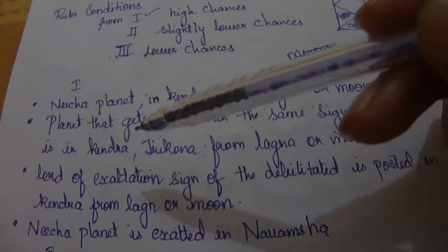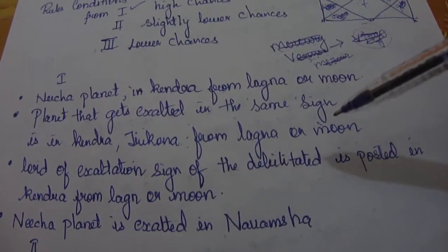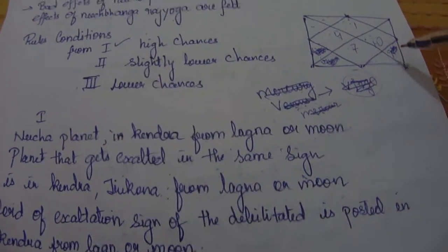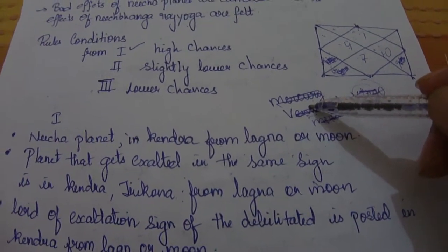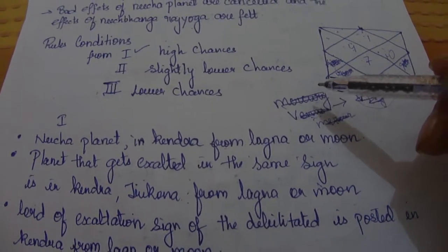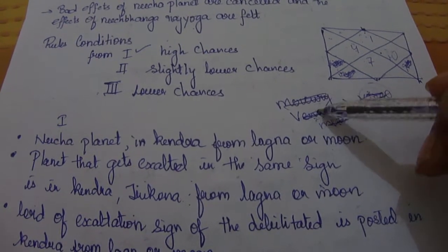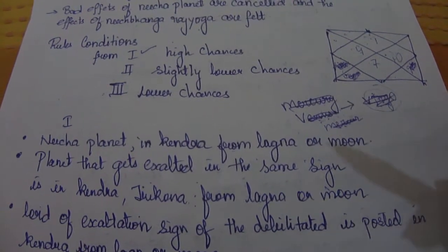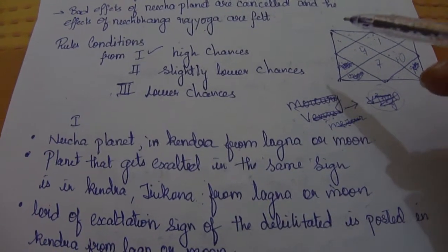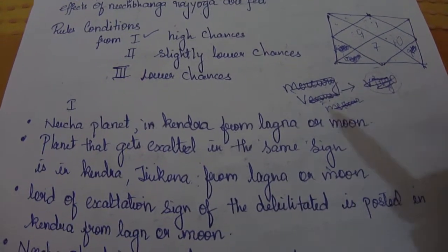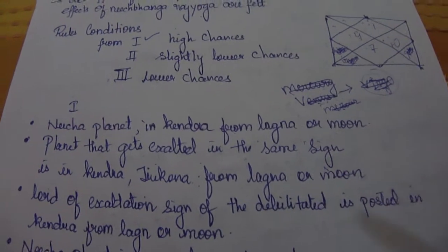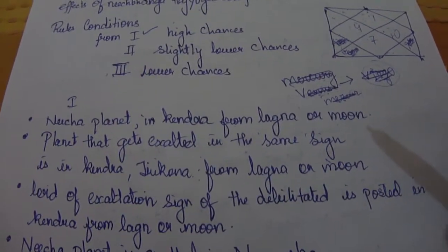Another rule is that the Lord of the exaltation sign of the debilitated planet is posted in Kendra from Lagna or Moon. For example, Venus is in Virgo where it is debilitated, but Venus gets exalted in Pisces, and the ruler of Pisces is Jupiter. So if Jupiter is placed in a Kendra, this will give Neecha Bhanga Raja Yoga.